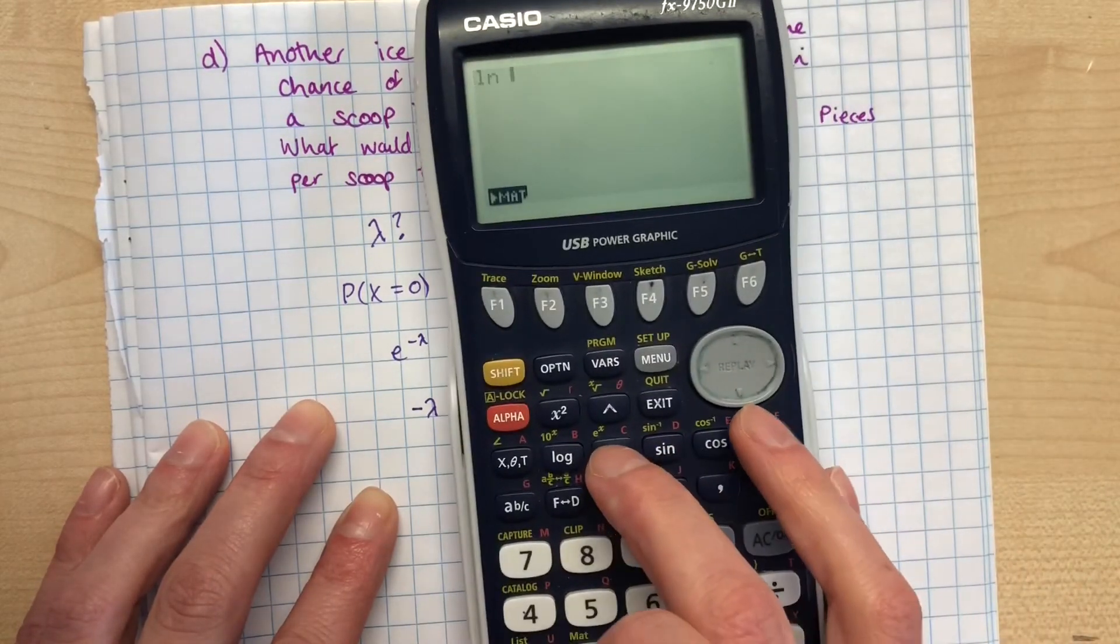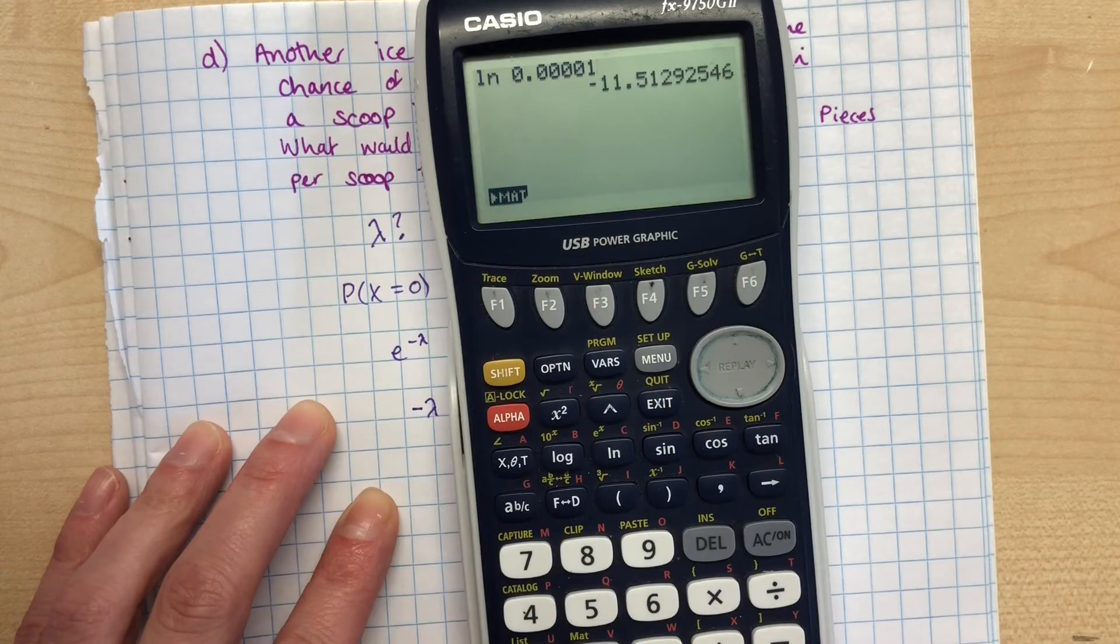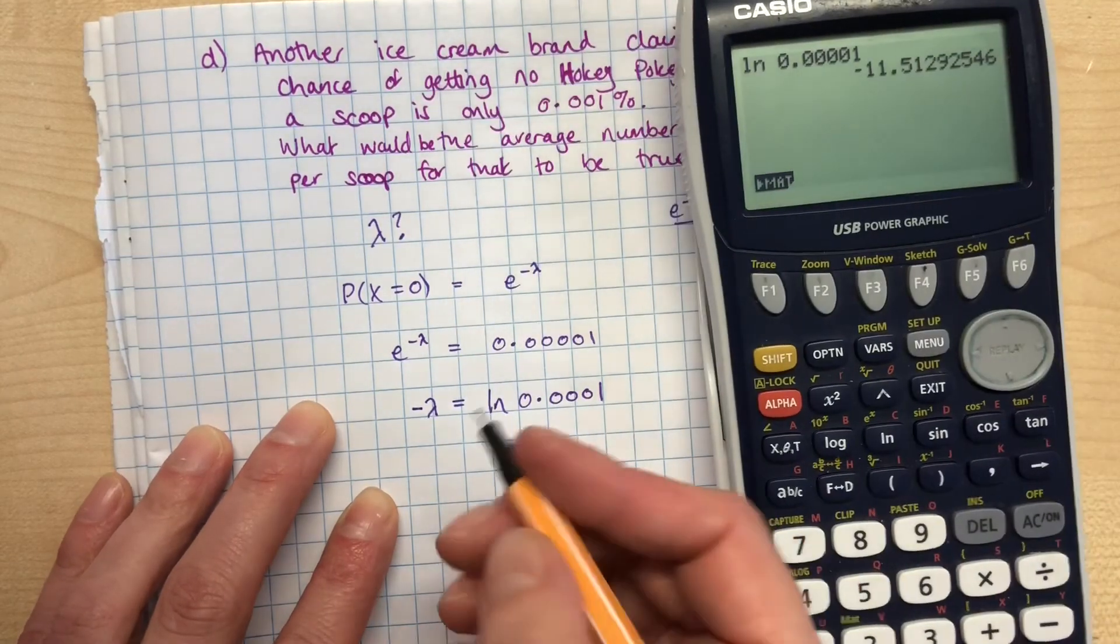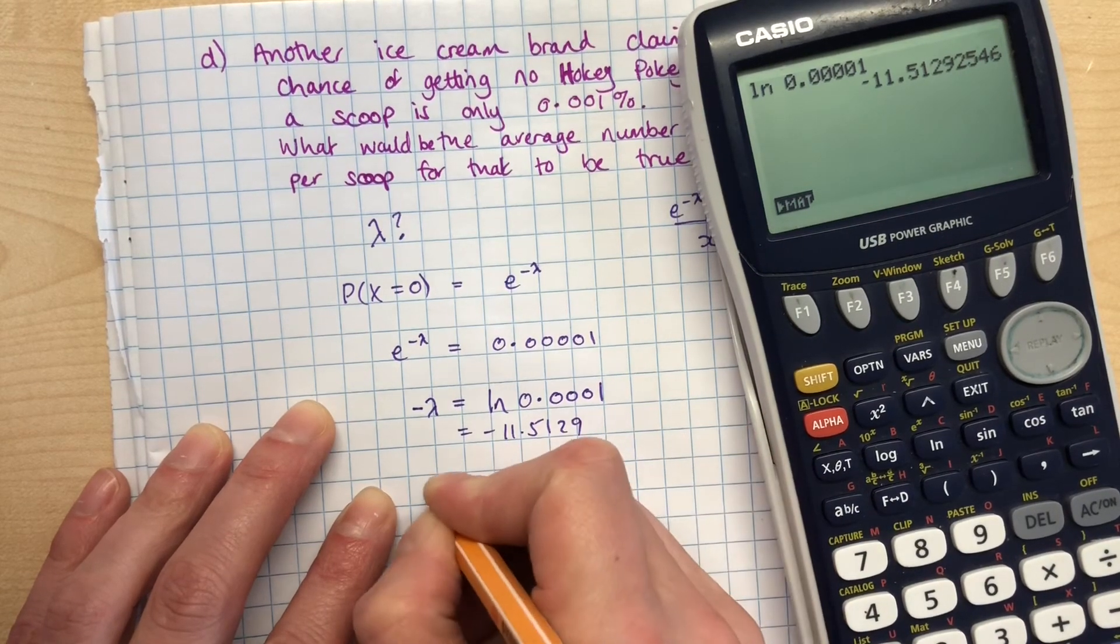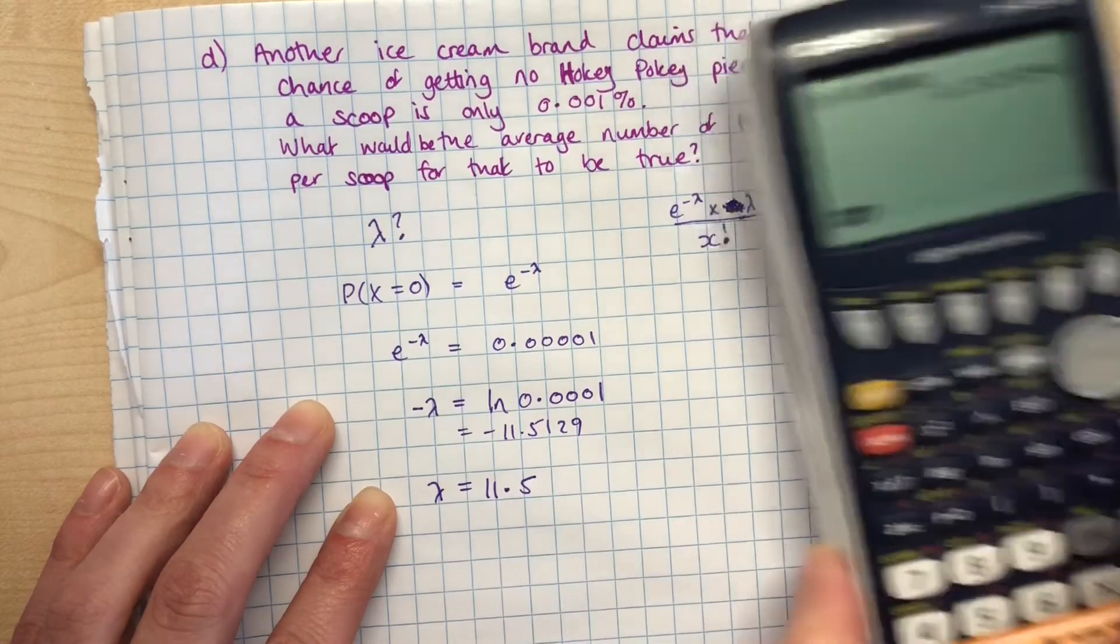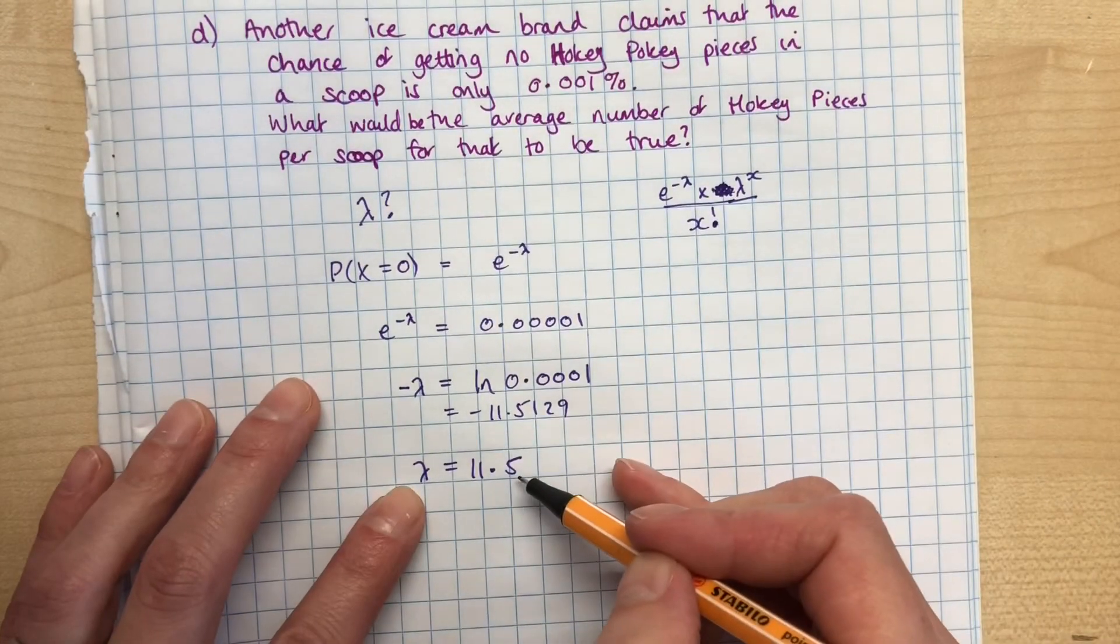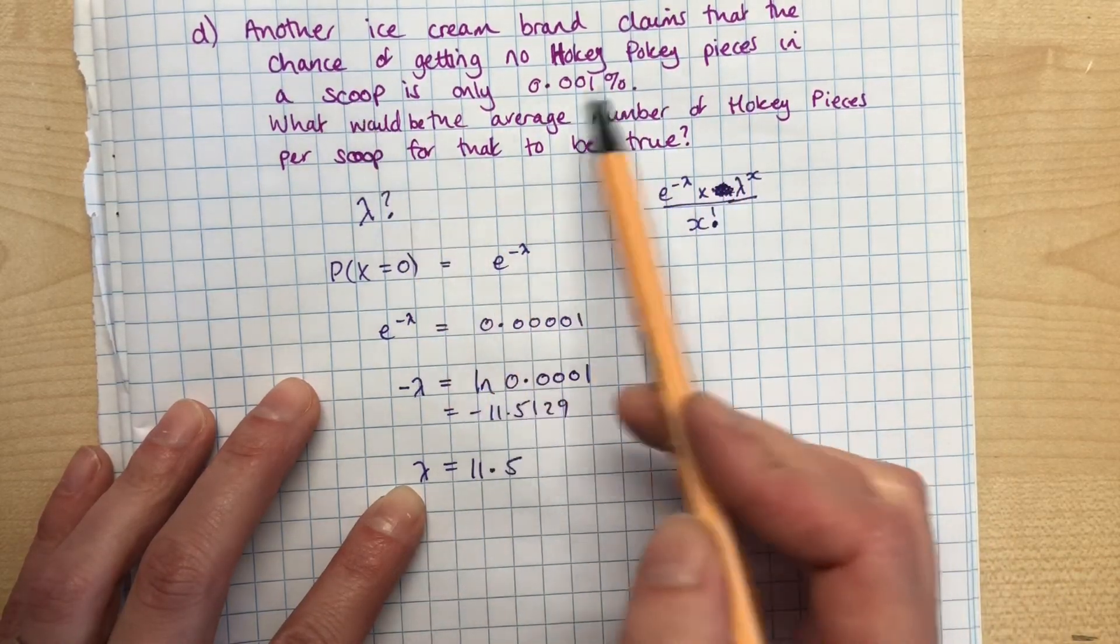So if we do the natural log of 0.00001, we get minus 11.5129. So that's minus 11.5129, so therefore lambda is 11.5. So we've got an average of 11.5 Hokey Pokey pieces per scoop to make this claim true.